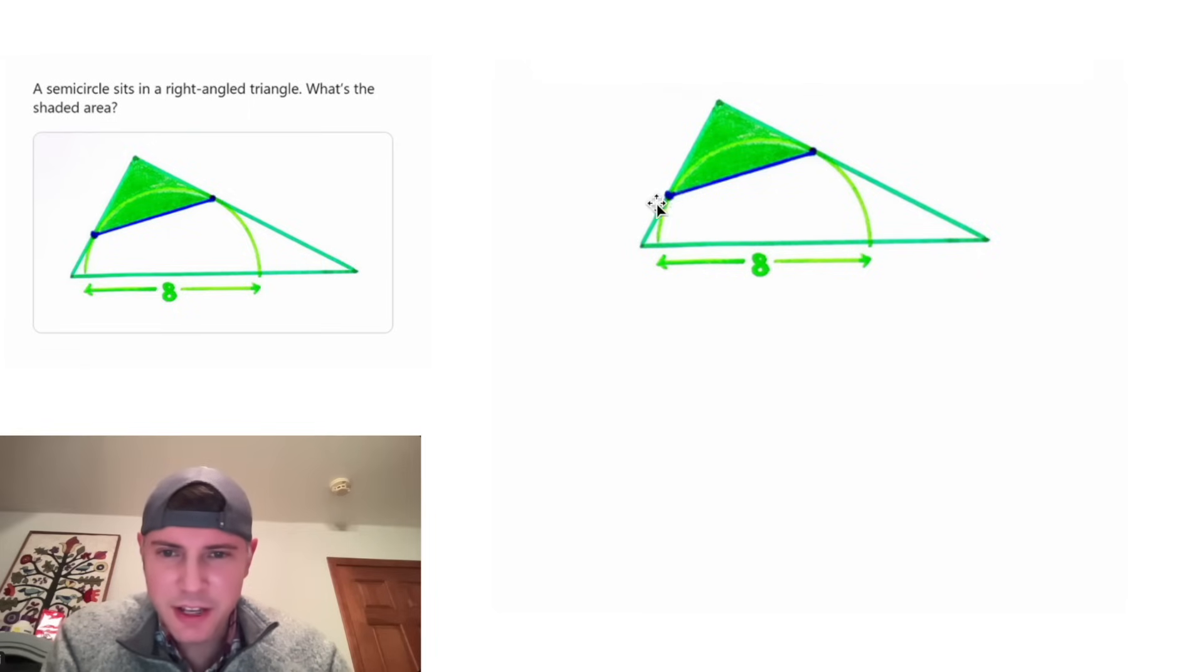We have two tangent lines here. Let's extend this tangent line to here and this tangent line to here. These meet at a right angle because we were told it was a right-angled triangle.